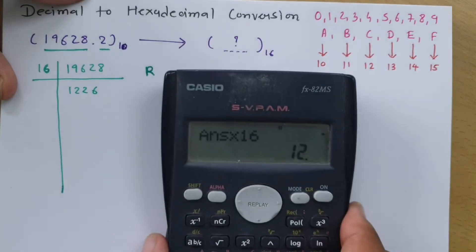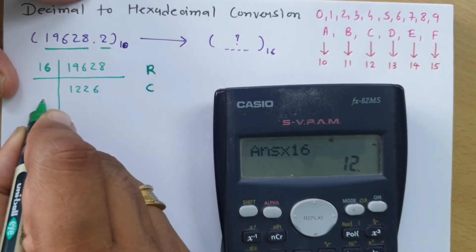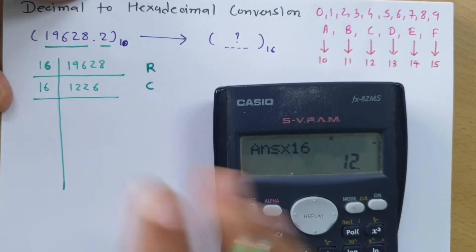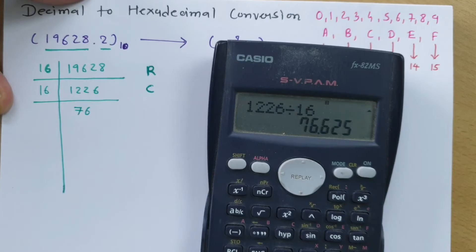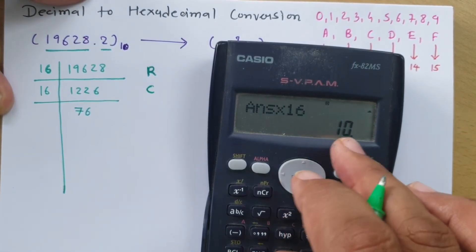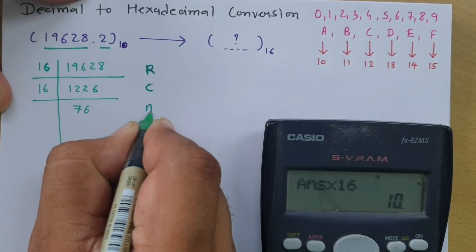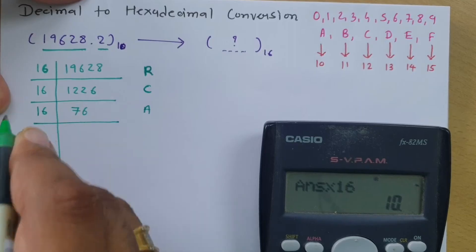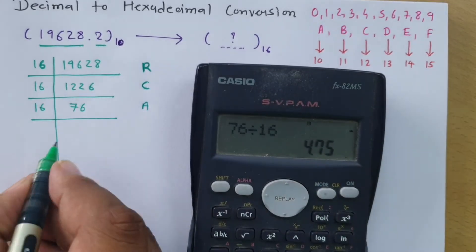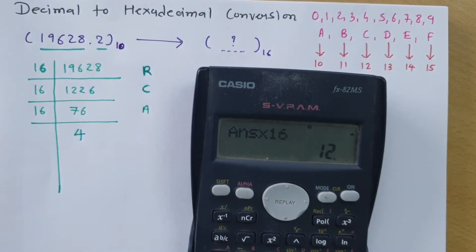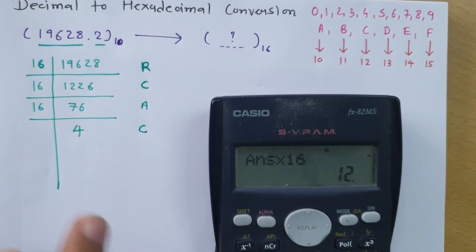Remainder 12 is equivalent to C in hexadecimal. Next, 1226 divided by 16 gives 76 with remainder 10, and 10 is equivalent to A. Then 76 divided by 16 gives 4.75, so 4 is the quotient and the remainder is 12, which is again equivalent to C.